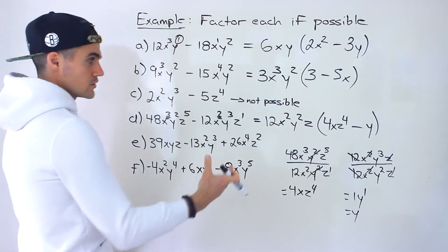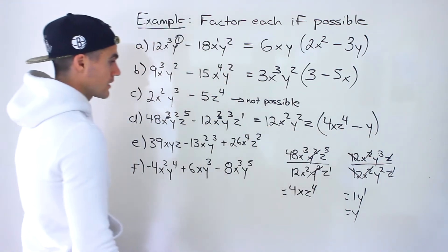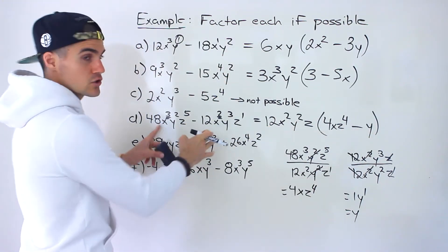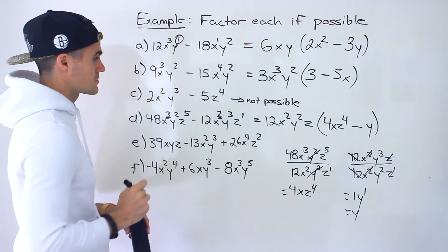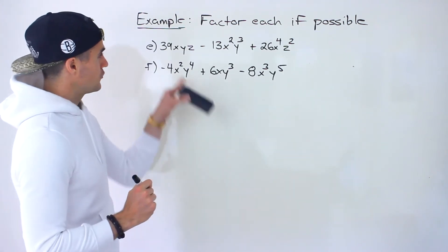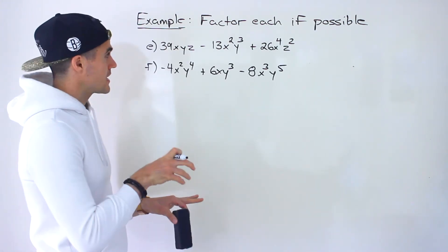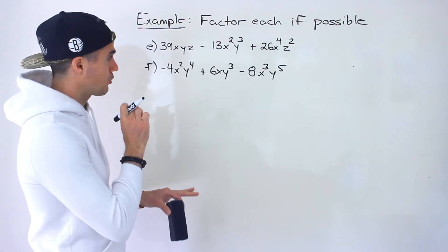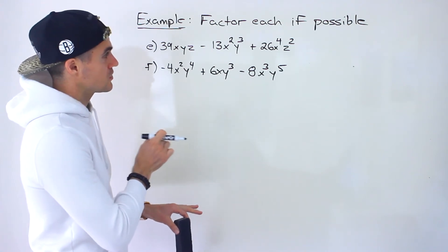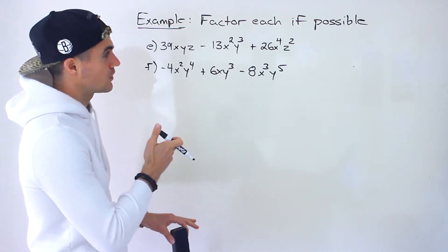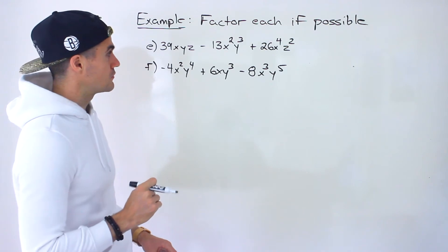If you want to do a check, expand inside the bracket and you should get back the original expression. Moving on to part E: 39xyz minus 13x squared y cubed plus 26x to the 4 z squared.